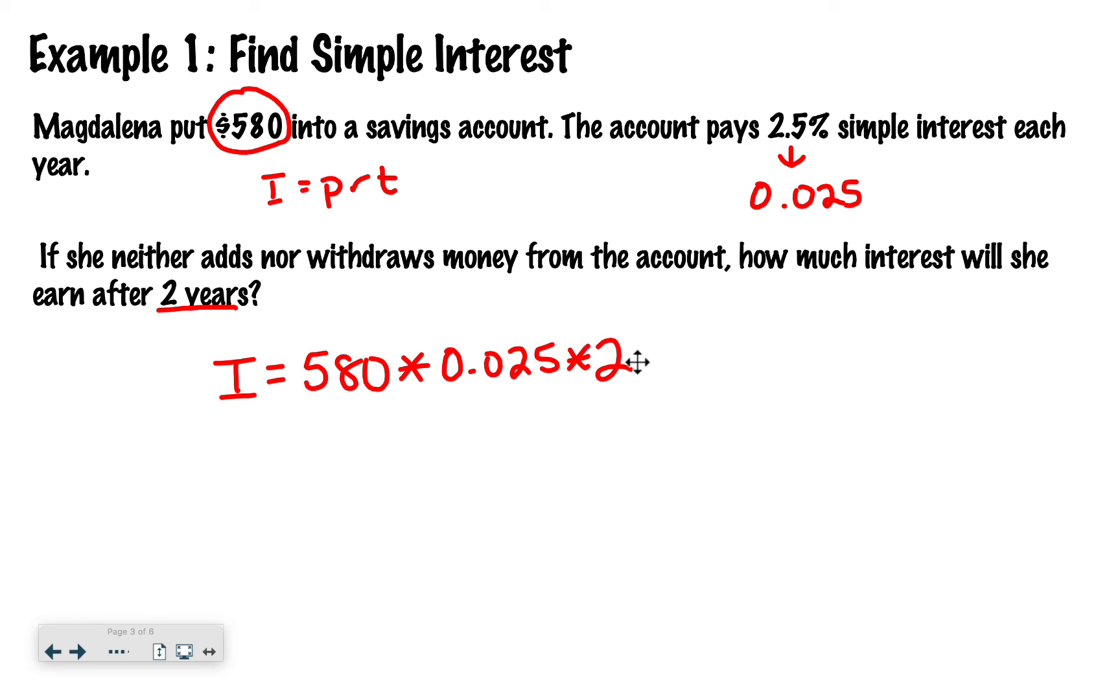And then I'm going to multiply by the time in years, which is 2. So then I can type all of this into the calculator at once. I'm going to type 580 times 0.025 times 2. And that tells me that Magdalena is going to earn $29 in interest within the two years.